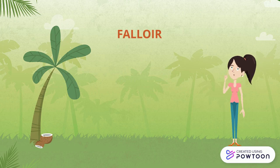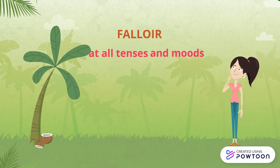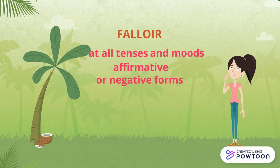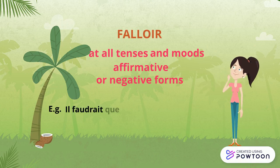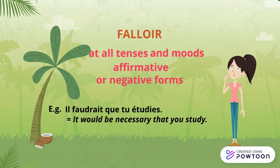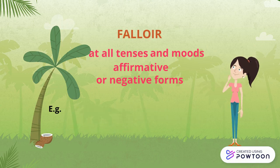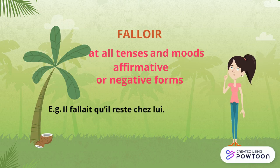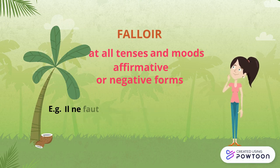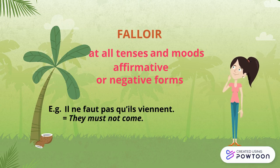As you can see, like other impersonal verbs, falloir can be conjugated at all tenses and moods, in affirmative or negative form. For instance, il faudrait que tu étudies (it would be necessary that you study, or you should study), il fallait qu'il reste chez lui (he had to stay home), il ne faut pas qu'il vienne (they must not come).